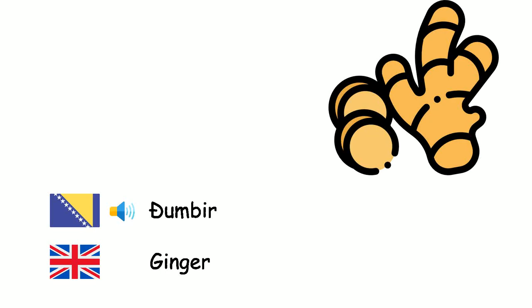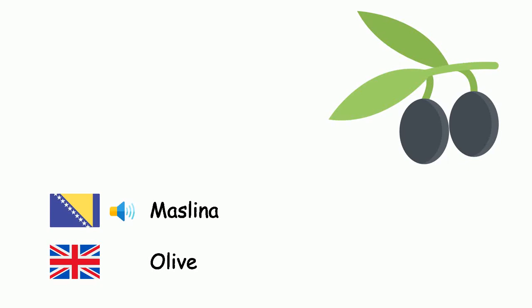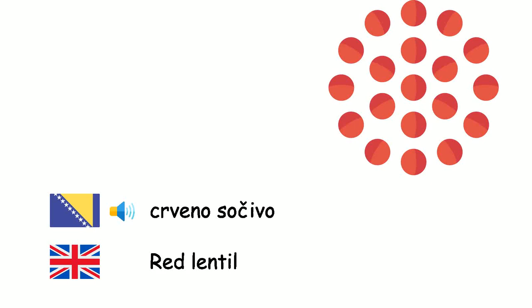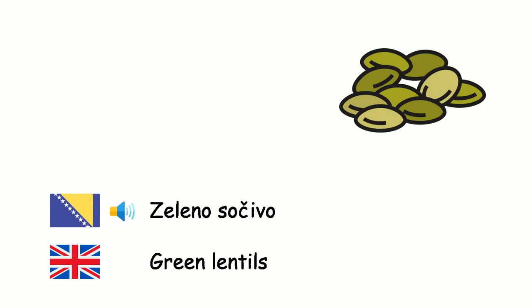Džumbir. Maslina. Maslinovo ulje. Crveno sočivo. Zeleno sočivo. — Ginger. Olive. Olive oil. Red lentil. Green lentils.